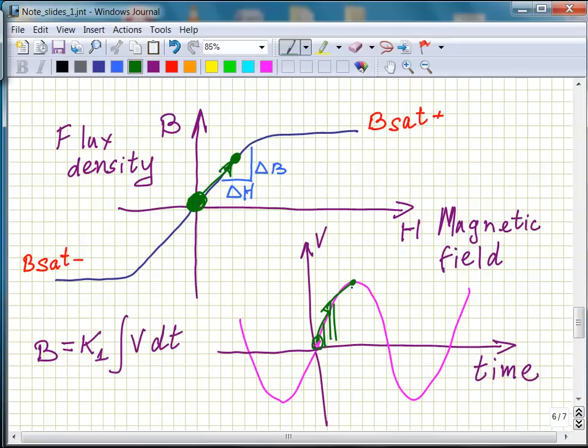And still, as we accumulate more volt seconds, we should have moved to this point, because this is the distance of B related to the full volt seconds of one half cycle.